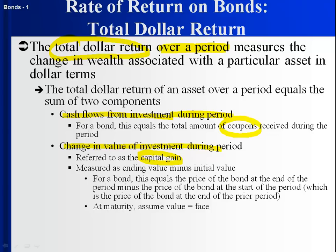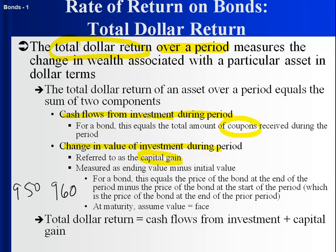For example, suppose at the beginning of the period our bond had a value of $950, and at the end it had a value of $960. We're $10 richer from the capital gain. The total dollar return is the sum of the cash flows plus the capital gain. If the bond paid a coupon of $40, then at the end we have a piece of paper worth $960 and $40 in our pocket — we're $50 richer, so our total dollar return is $50.